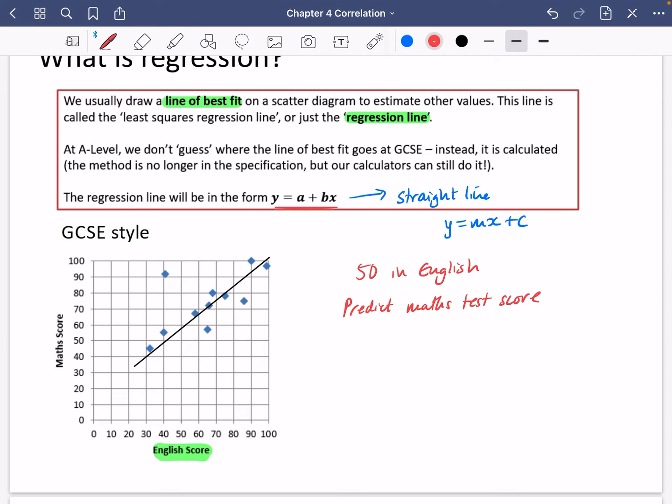So what we would do is we go to 50. We would go up to the line and we would come across. And it looks like I predict a mark of 58. So I predict a maths score. This predicts a maths score of about 58.